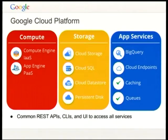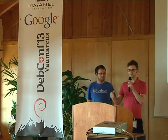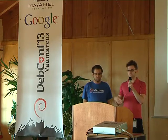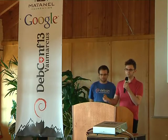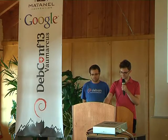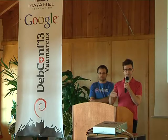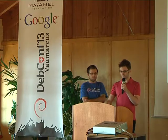We also have Google App Engine, which is a platform as a service — you give us some Java code written in a certain way, and we'll run it in the cloud. We also expose various storage subsystems at various levels: SQL, persistent disks, NoSQL, et cetera. And we have various app-level services such as BigQuery and various queue services. All these services are built on a common REST interface so that you can programmatically interface with the cloud in a fairly consistent way.